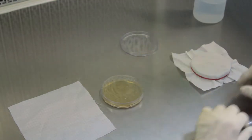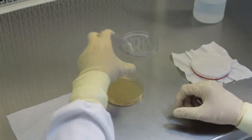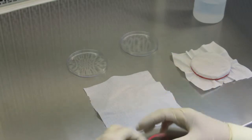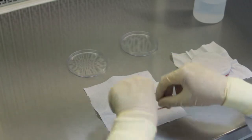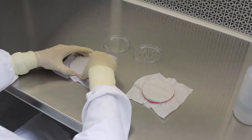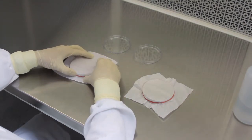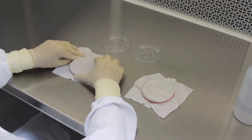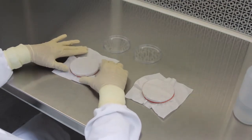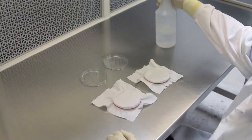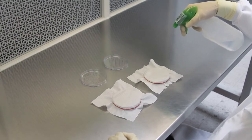In a horizontal laminar flow hood, the lab technician places a piece of fabric over the top of a petri dish containing nutrient agar. He then fastens the fabric to the petri dish using a rubber band. The fabric sample does not touch the surface of the agar. Next, he sprays a small amount of liquid containing bacteria from a squirt bottle onto the fabric and lets the plate sit for 24 hours.